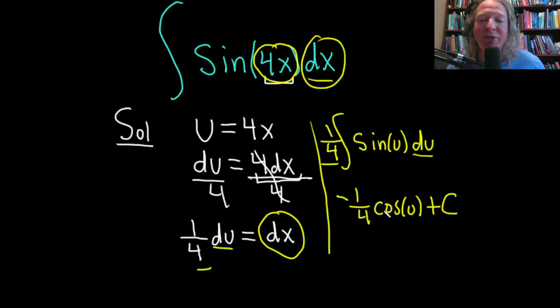And you should check your answer, right? If you differentiate this, you should get the integrand. The derivative of cosine is negative sine. There's already a negative here, so you're going to get a positive sine. And the 1/4 just hangs out.